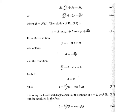The first boundary condition is y = 0 at x = 0, which is the common condition for a fixed end, giving B = −MA/P. The second boundary condition is dy/dx = 0 at x = 0, meaning the slope is zero at x = 0, which leads to A = 0. The solution can then be rewritten as y = (MA/P)(1 − cos K₁x). Denoting the horizontal displacement at x = L₁ by delta, we get delta = (MA/P)(1 − cos K₁L₁).